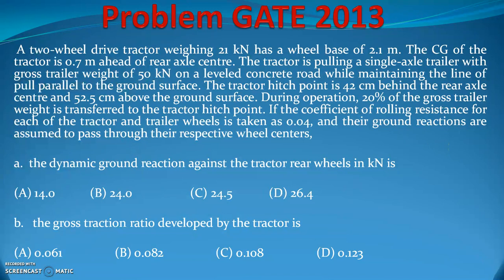The tractor hitch point is 42 centimeters behind the rear axle center and 52.5 centimeters above the ground surface. During operation, 20 percent of the gross trailer weight is transferred to the tractor hitch point. The coefficient of rolling resistance for both the tractor and trailer is 0.04, since it's a concrete ground — even if not given, you assume 0.04.